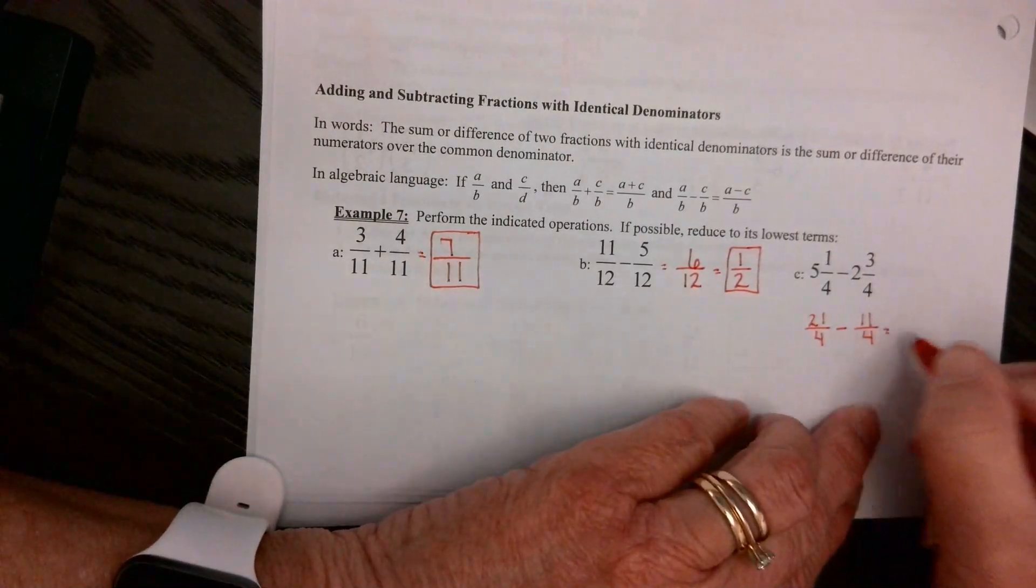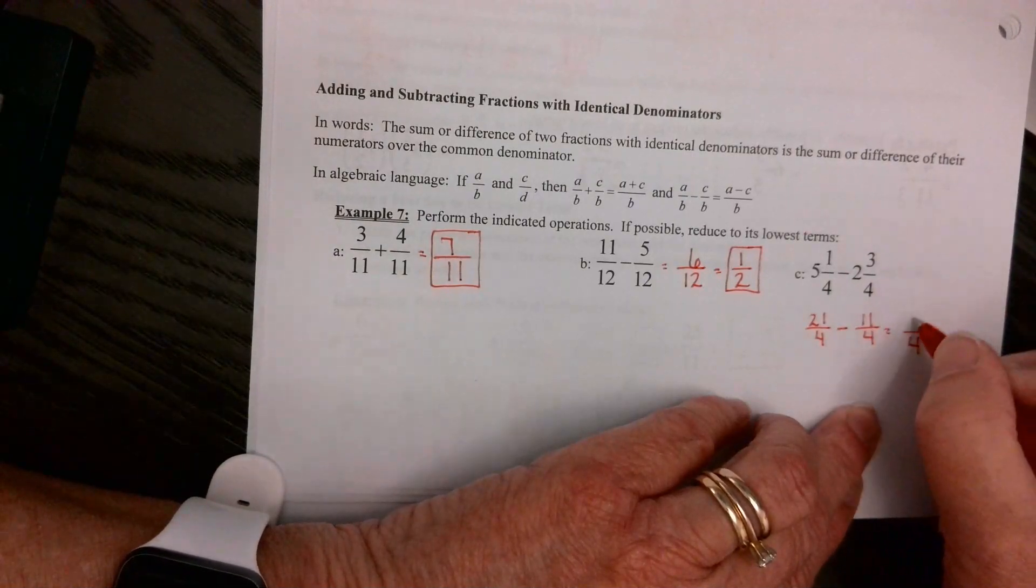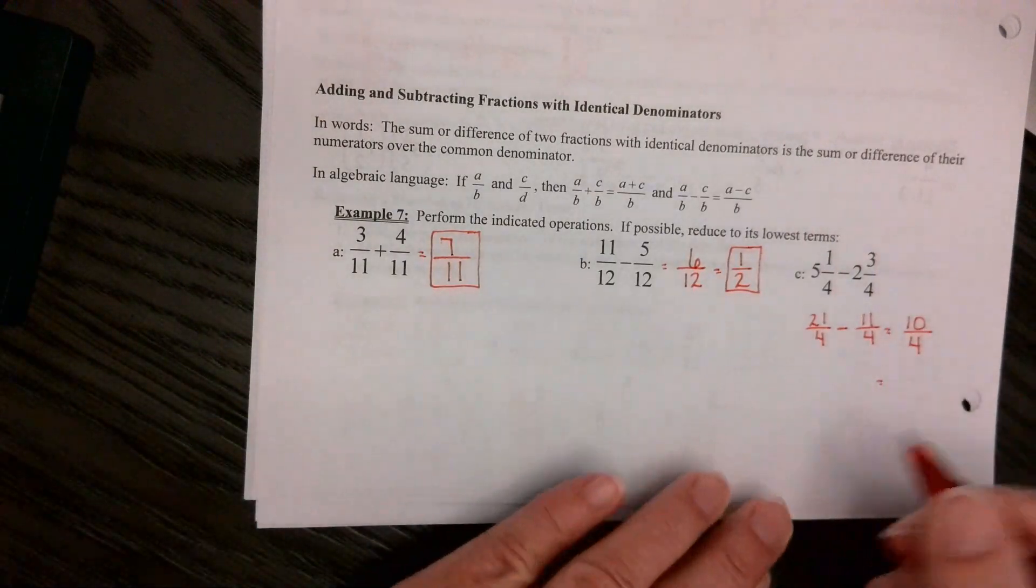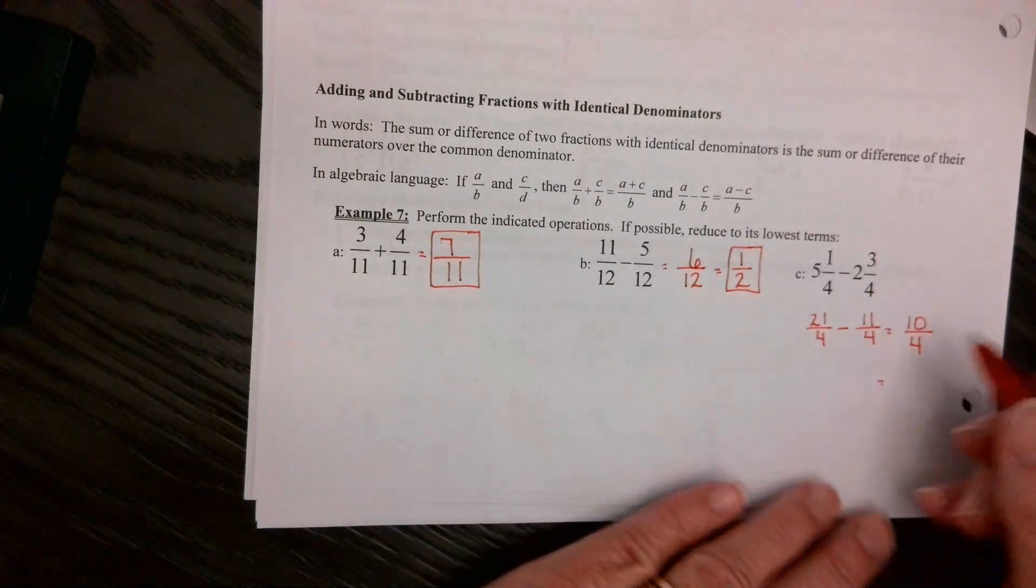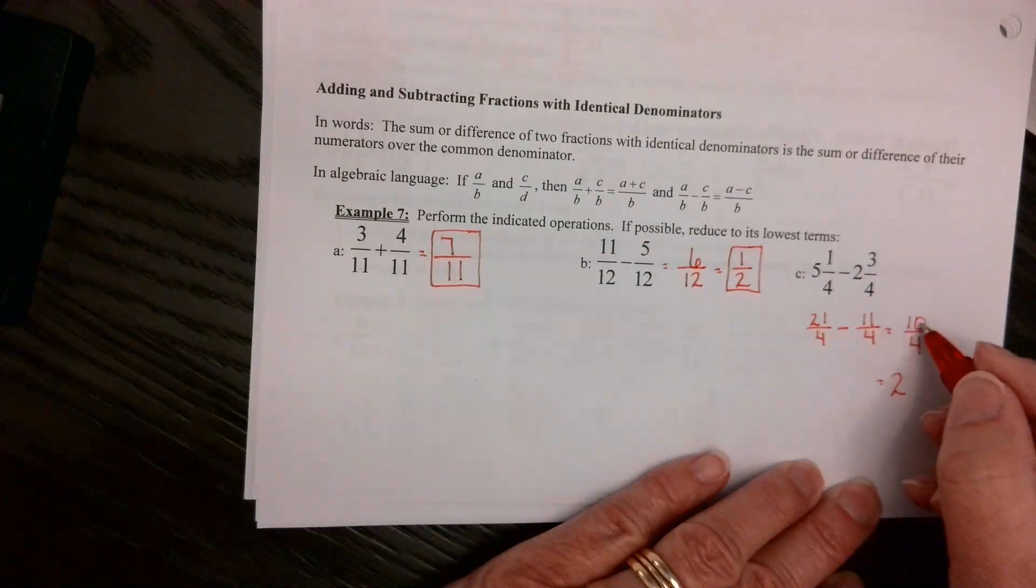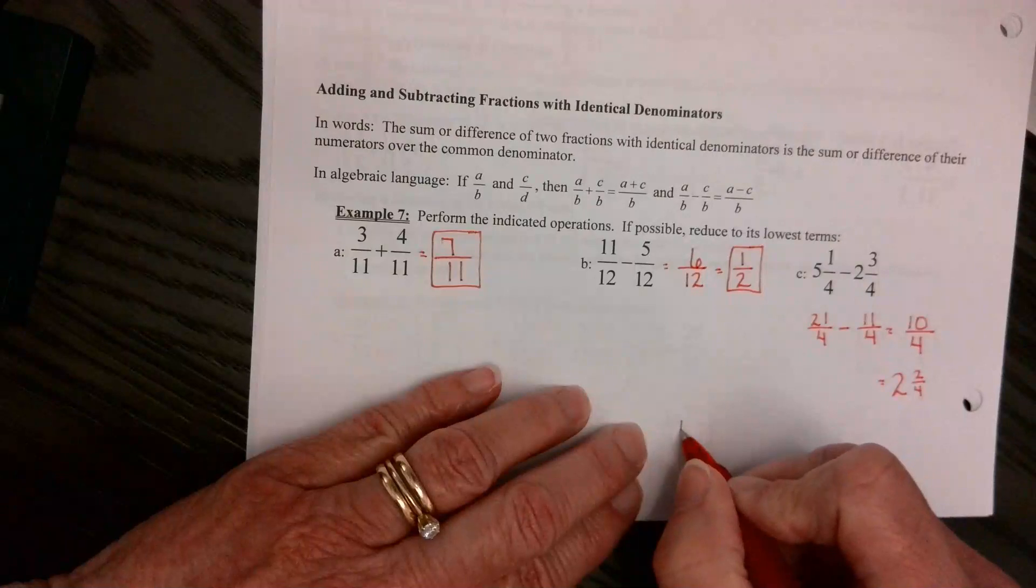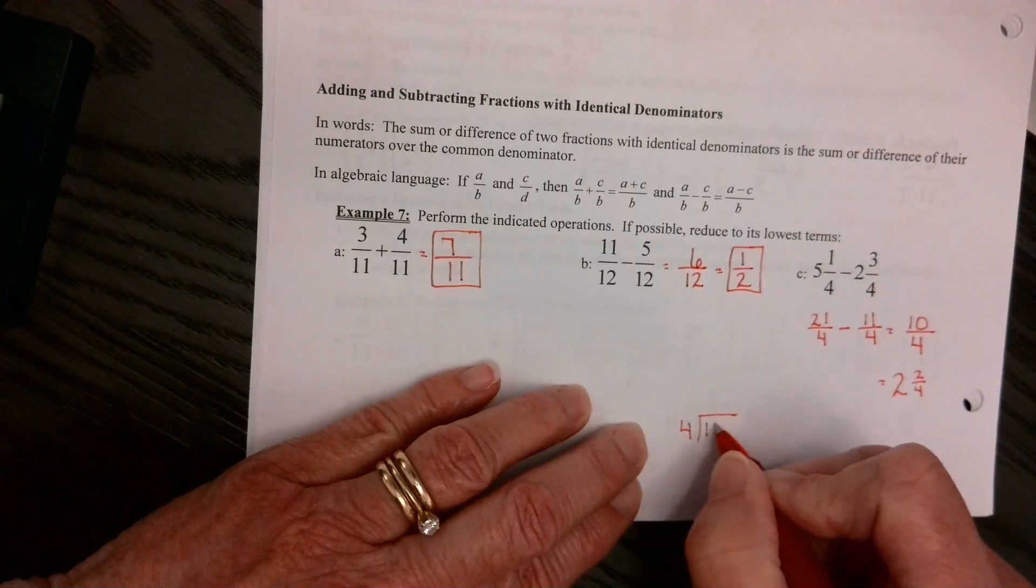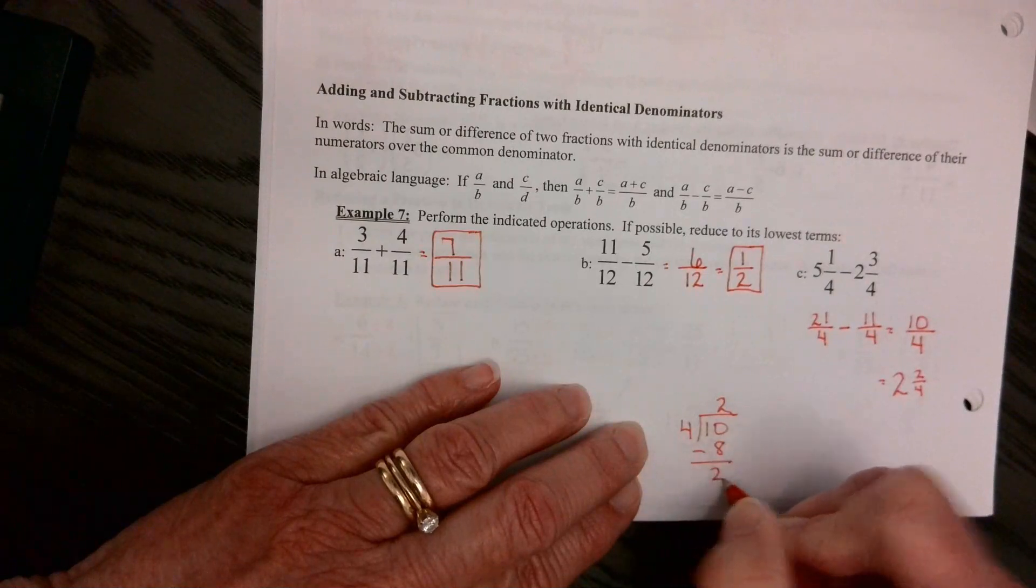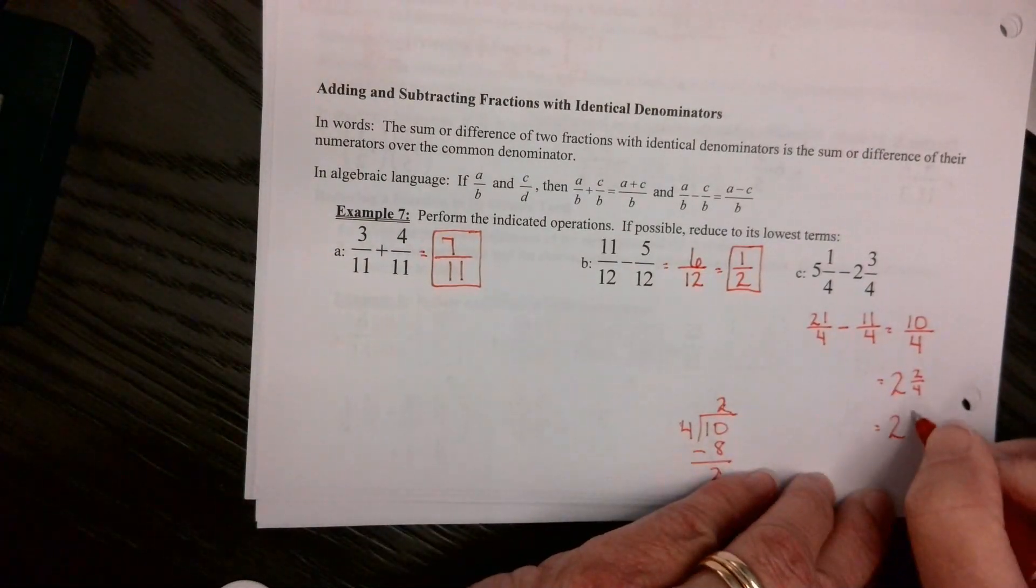Now, our denominators are the same, so keep it 4, and go 21 minus 11 is 10. And then I just do this. 4 goes into 10 two times. Well, 2 times 4 is 8. Well, 2 left over over 4. I just don't have to do this, okay? But you can. Keep doing this until you get it. 2 and 2/4. And then 2/4 reduces to 1/2.